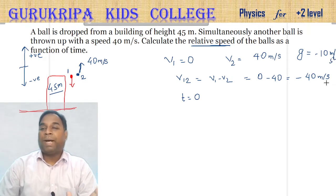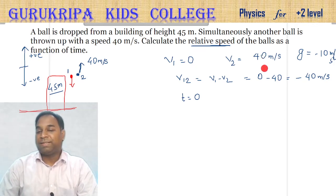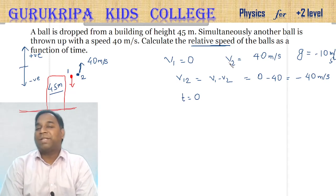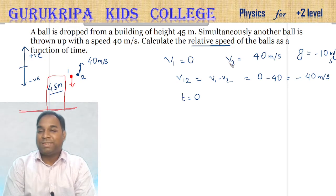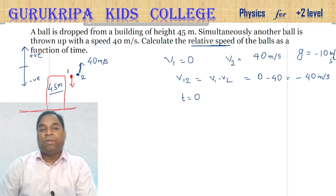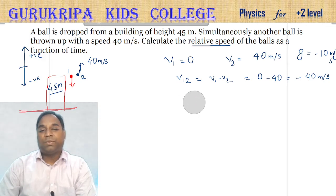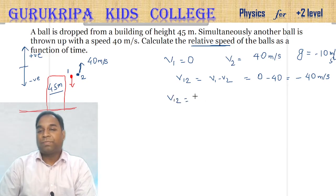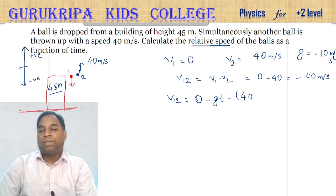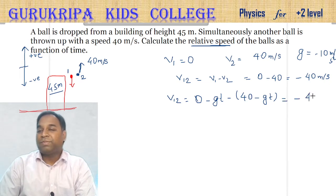Acceleration due to gravity is minus 10 meters per second squared for both balls. At any time t, V1 = 0 minus gt and V2 = 40 minus gt. So V1 with respect to 2 equals (0 minus gt) minus (40 minus gt) = 0 minus 40 plus gt minus gt = minus 40 meters per second. The gt terms cancel.